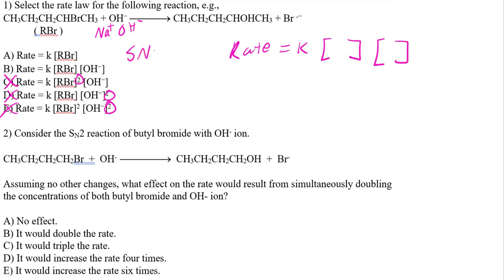In both cases, the '2' shows that your rate is going to have two reactants. Two reactants corresponds to SN2 or E2. Answer choice A would correspond to SN1 or E1. SN1 or E1 occurs primarily when you're dealing with a neutral or very weak nucleophile, like water.